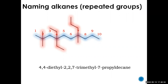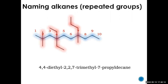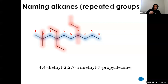A student asks: if there were ethyl groups at carbons 4 and 5, would you write '4,5-diethyl'? Yes, exactly — you list every single position number. You should have the same count of numbers as the count of groups. You must list all of them to show where each one belongs.